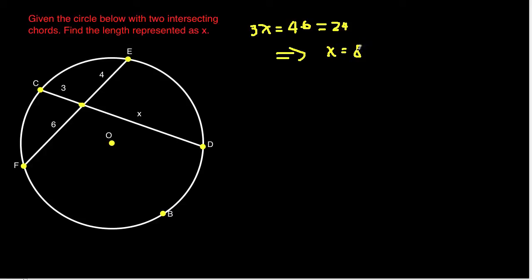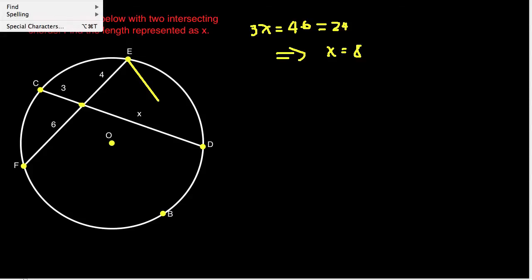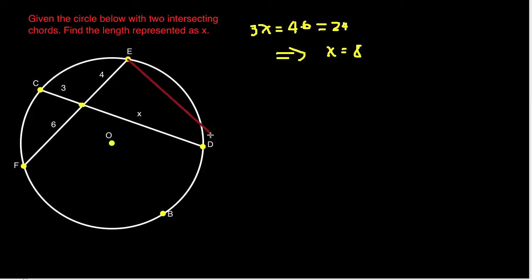Of course, using the JavaScript applet isn't a proof of the result. So let's see if we can prove it using a more traditional approach. As is common in geometry, the way I'm going to do it is by adding some extra lines — I'll change the color to red. I'll add a line here and a line here, and see what we can say about the resulting triangles.